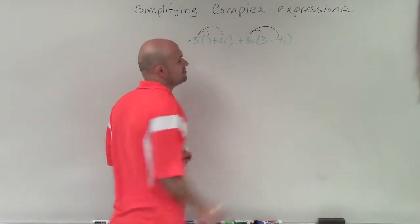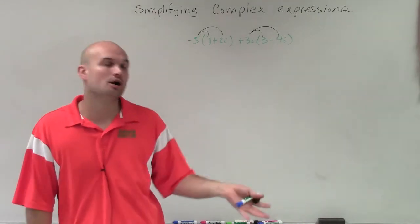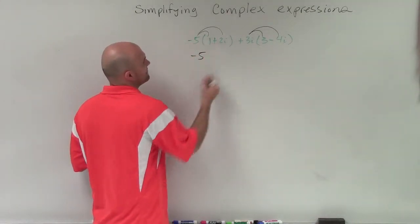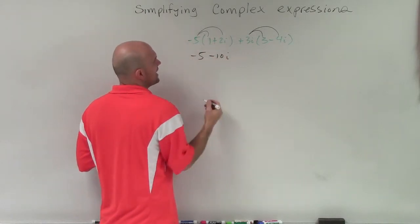So we need to make sure that we apply this multiplication across our binomials. So by doing this, negative 5 times 1 is negative 5. Negative 5 times 2i is negative 10i.